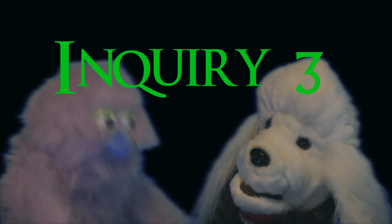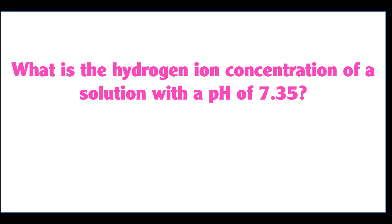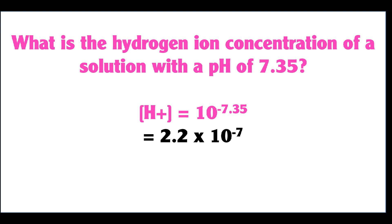Inquiry number three: what is the hydrogen ion concentration of a solution with a pH of 7.35? We're given the pH. The hydrogen ion concentration is equal to 10 to the negative 7.35 power, and solved, it's 2.2 times 10 to the negative 7. So that is your hydrogen ion concentration.